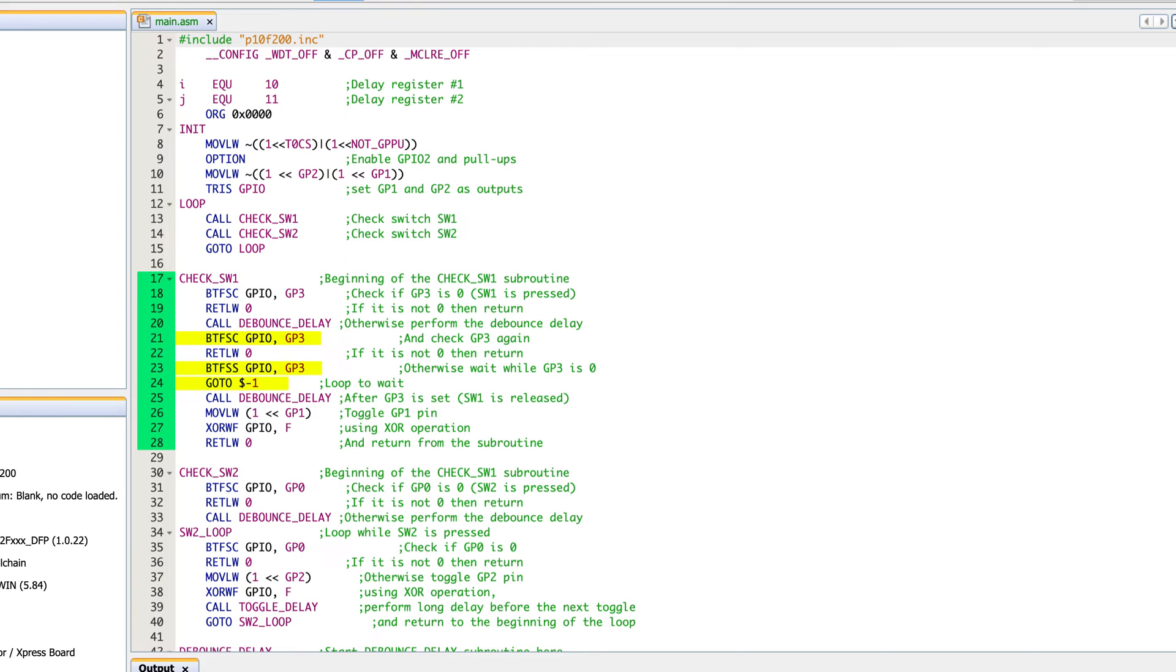So now we're doing the same thing that we were before, waiting for the release before we toggle the LED. That go to dollar sign minus one, as you remember that dollar sign is the current program counter, the current PC. So every time you hit line 24, it just bumps you back up to 23. It's waiting until 23 is released. And then if it is, it checks that debounce delay because that bounce happens in both directions. Once everything's good and you've had the debounce delay and you've checked and made sure you've actually released, that's where in 26 and 27 you toggle the GP1 pin, which is basically the LED.